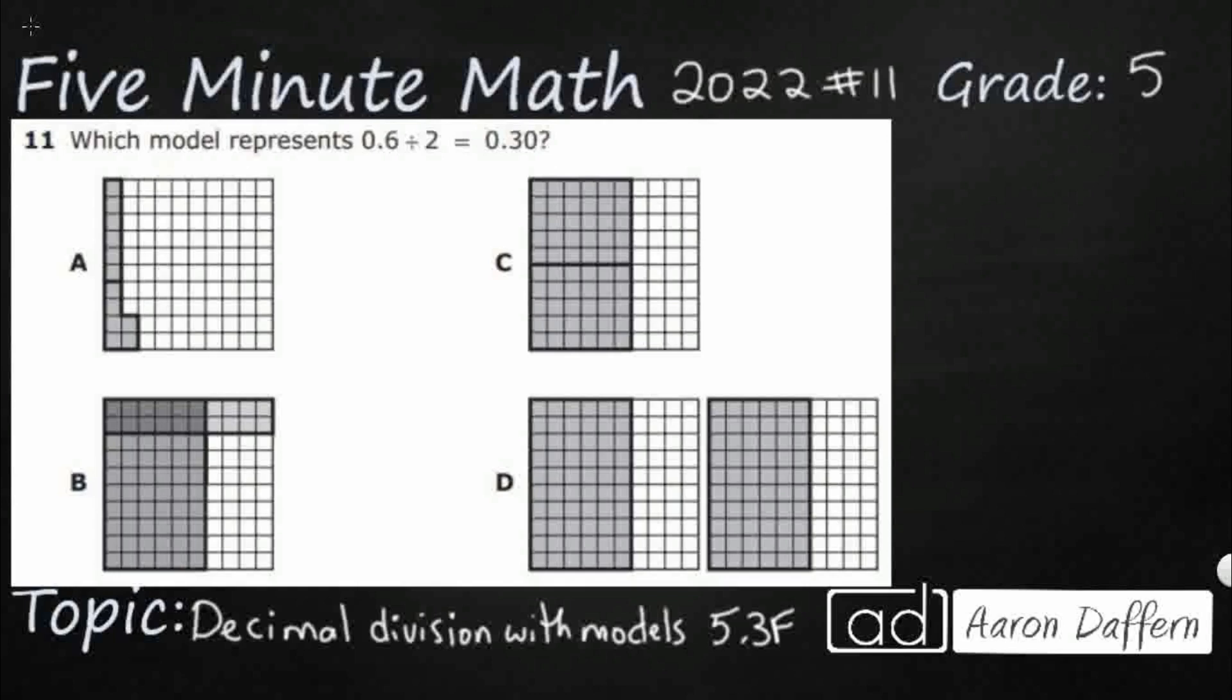If you haven't done so already, please go ahead and take a moment to pause the video, work this problem out on your own, unpause it, and we will look at our answers together. We've got four different models here. We're simply looking for 6 tenths divided by 2 equals 30 hundredths.